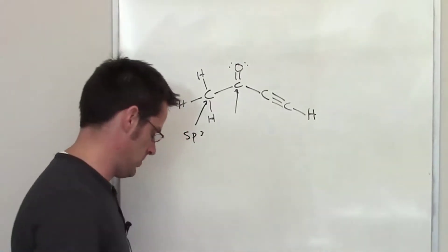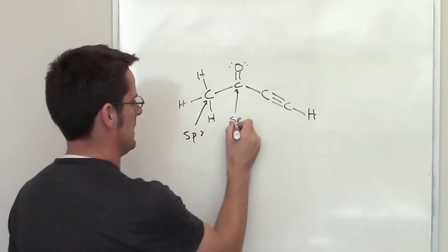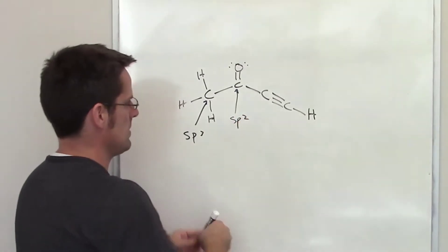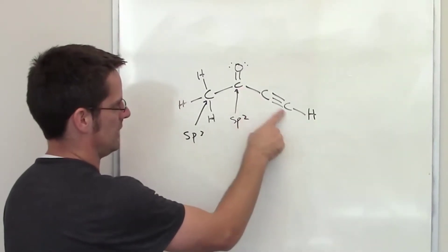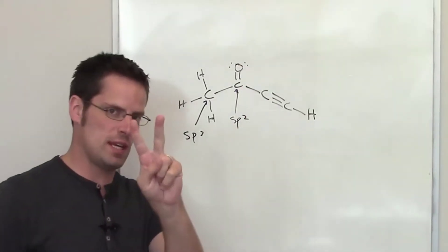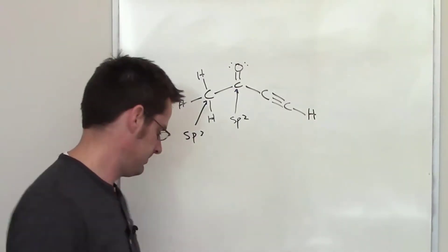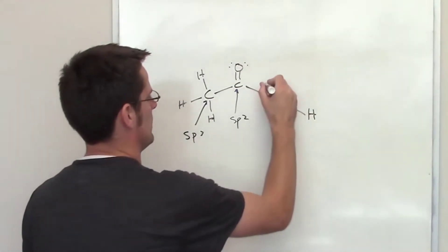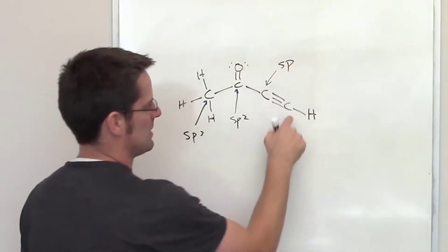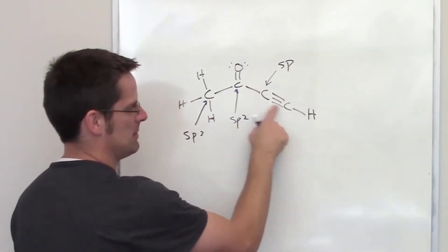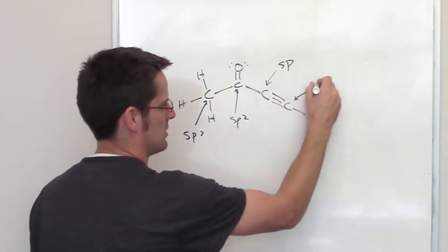This carbon right here has a carbon and a carbon around it. That is two things, so it is sp. And I always have to be careful with my finger when I'm doing that. Similarly, this carbon right here has two things around it, a carbon and a hydrogen, so it is also sp.